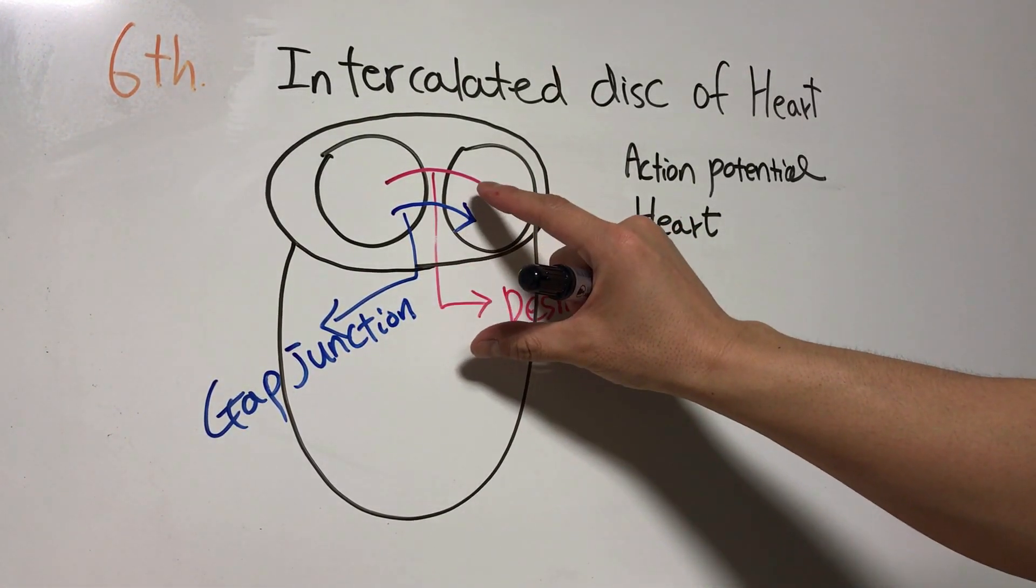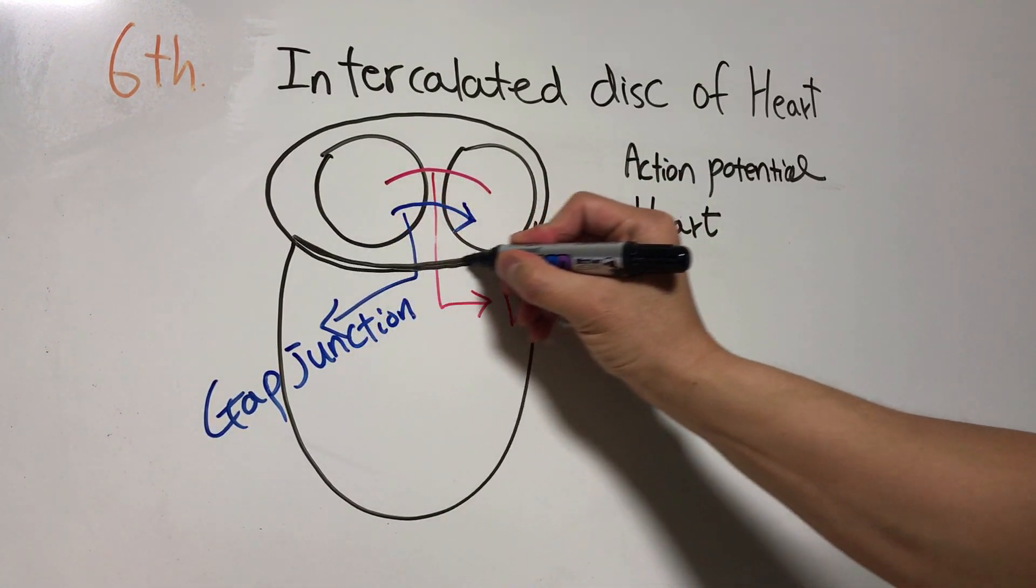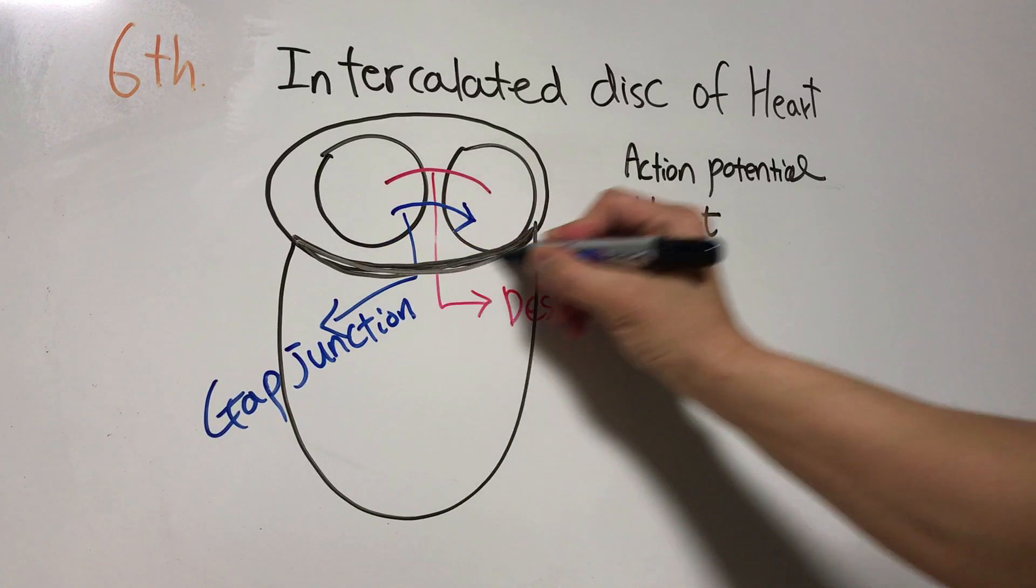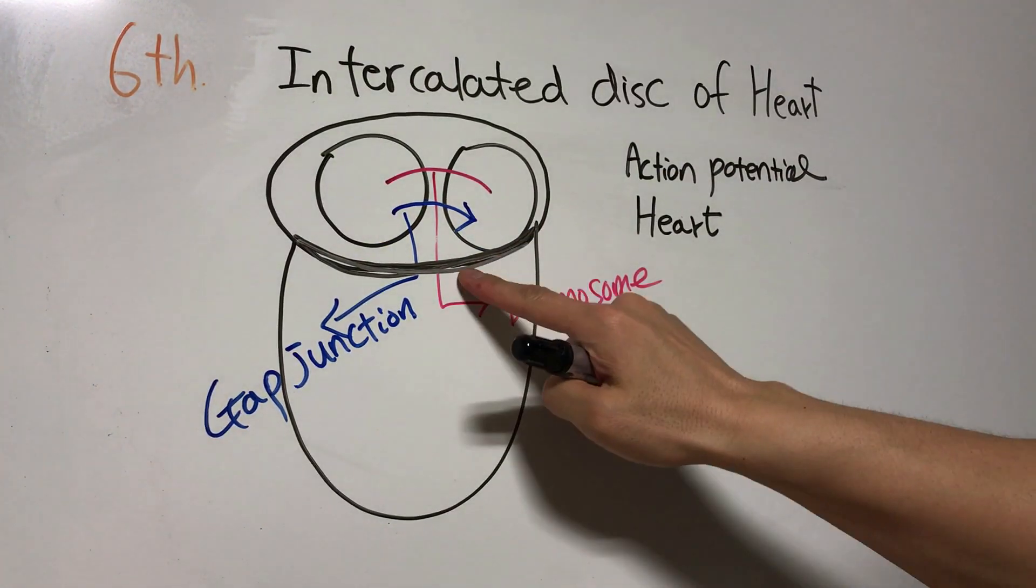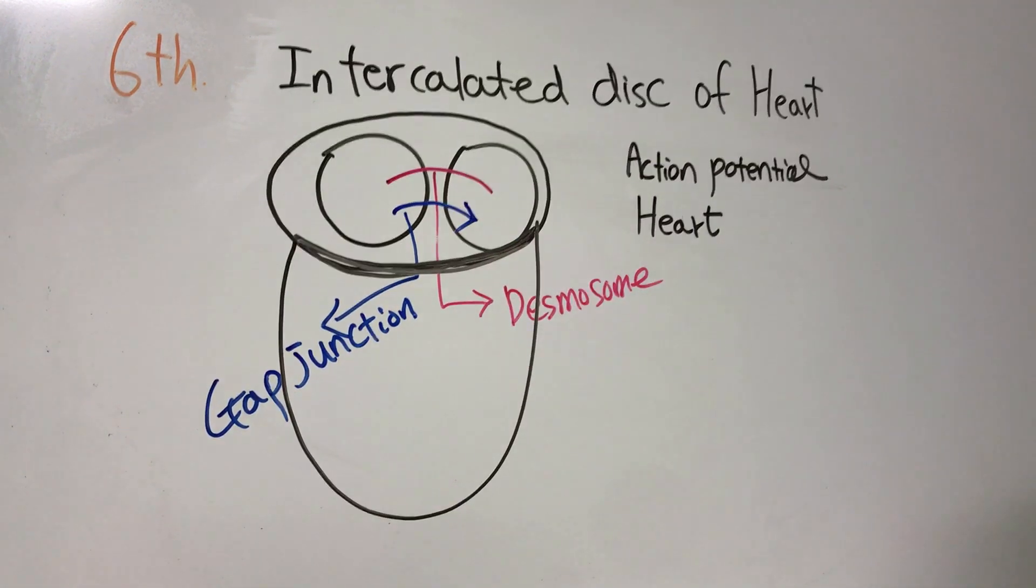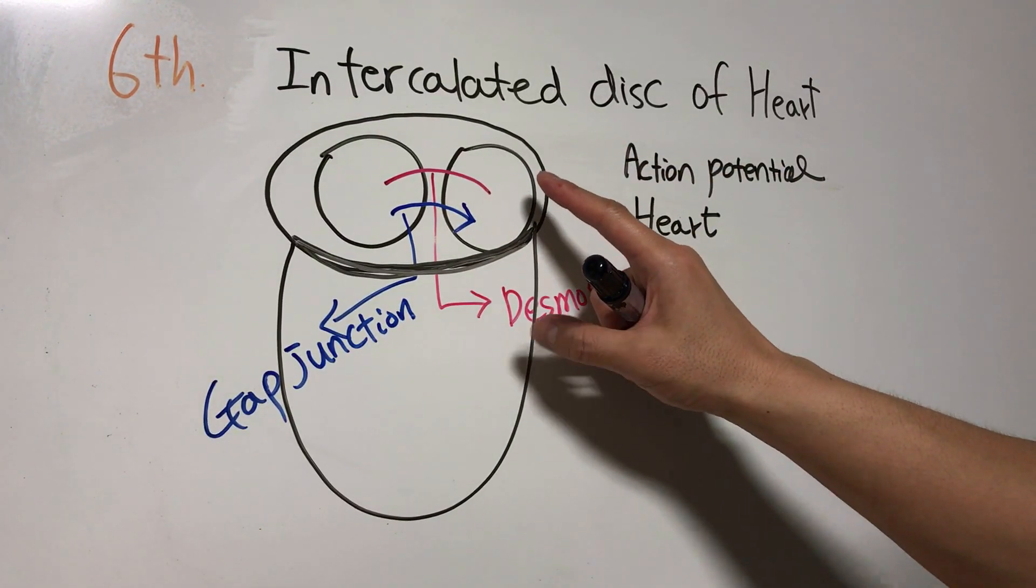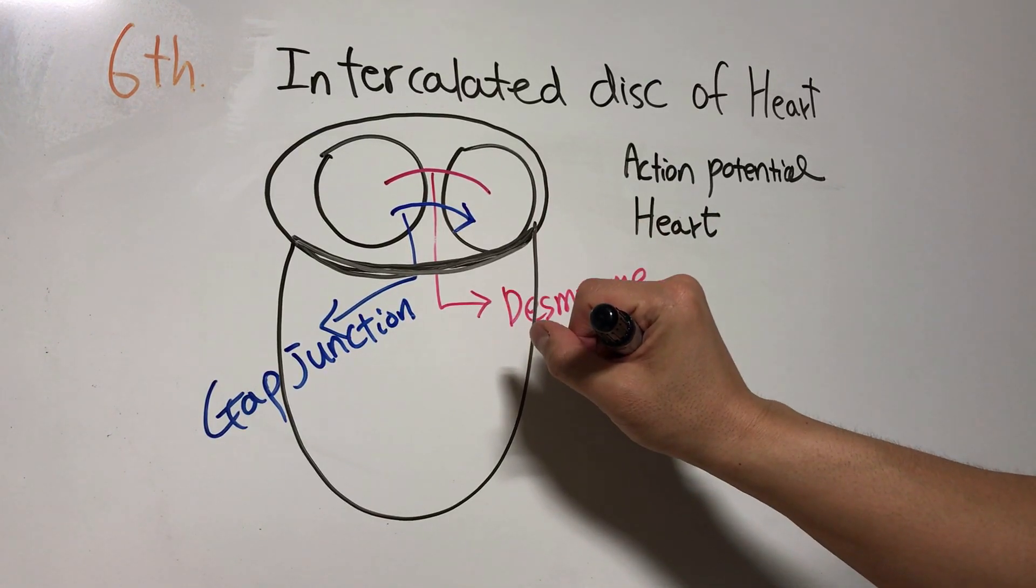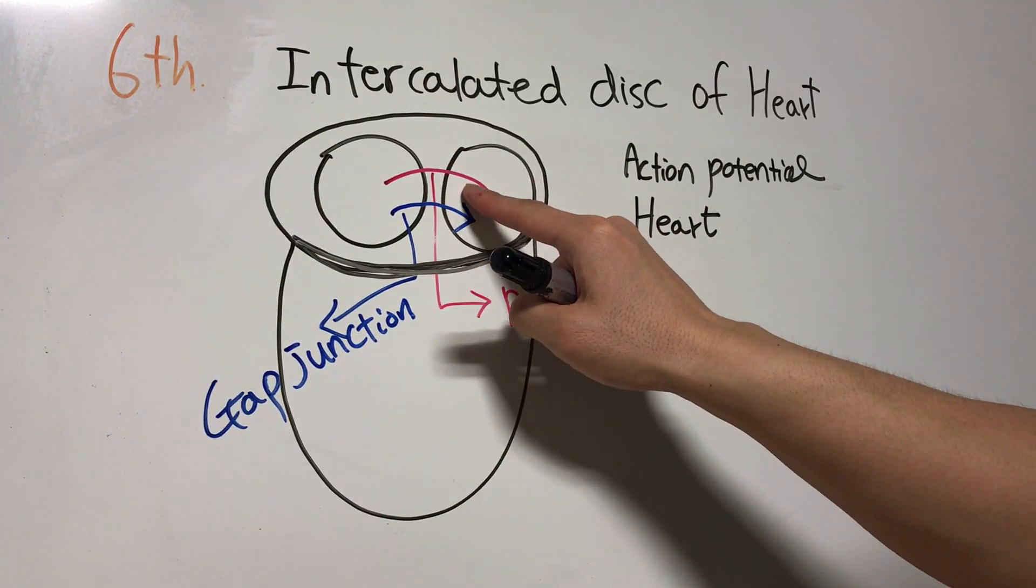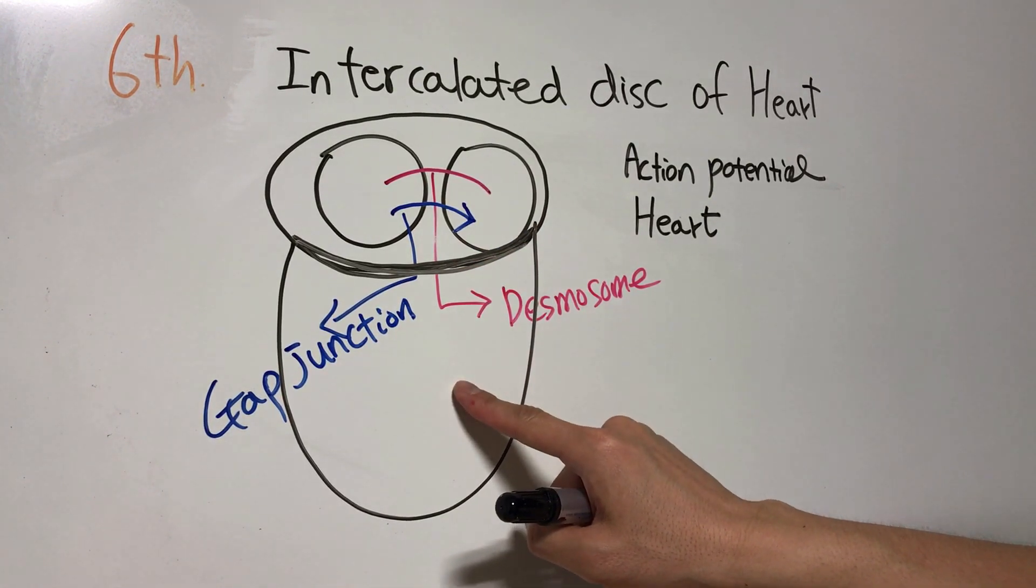They are separated by a fibrous skeletal structure that is an electrical non-conductor. As you know, in order to contract the heart, the action potential of the atrium must be delivered to the ventricle.